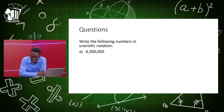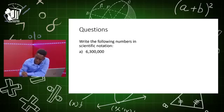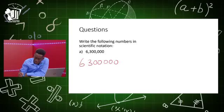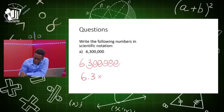Let's look at another example: write 6,300,000 in scientific notation. The decimal point is at the end, so we jump one, two, three, four, five, six places. This gives us 6.3 multiplied by 10 raised to the sixth power.